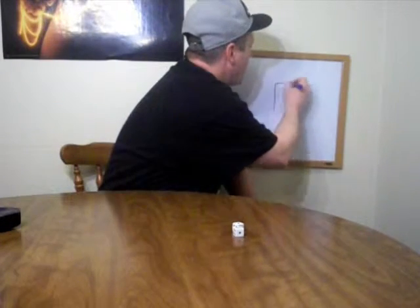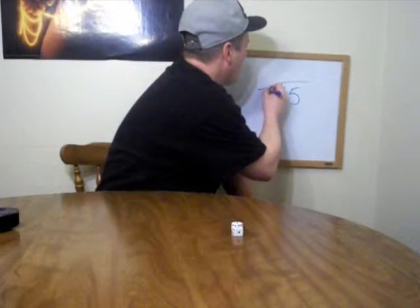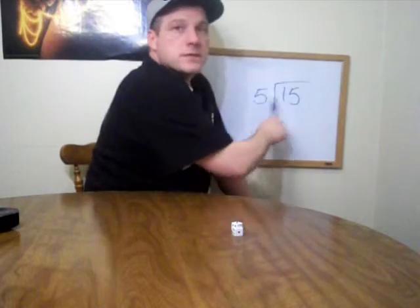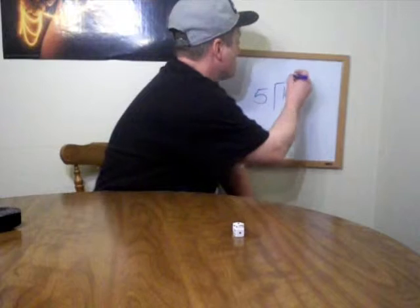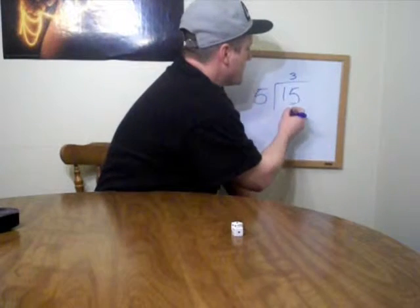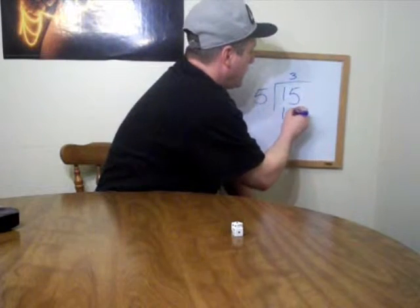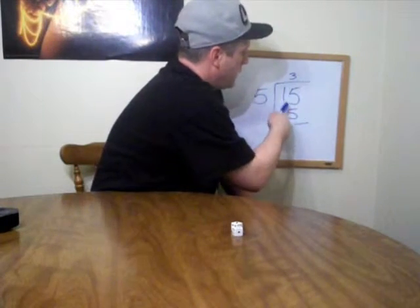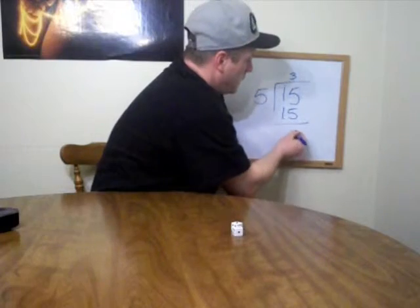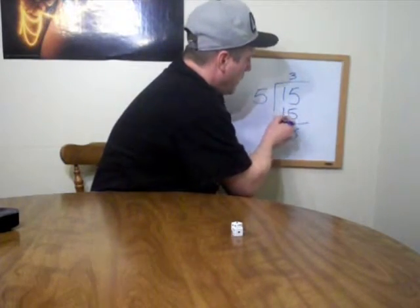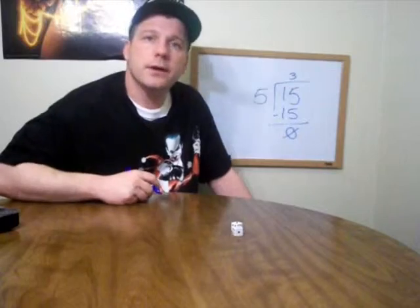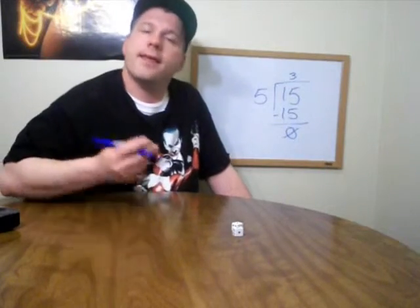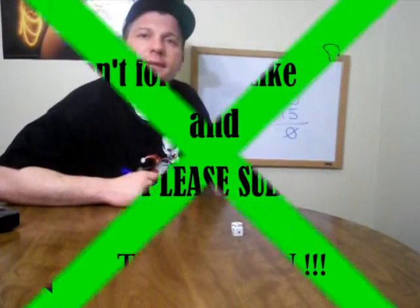15 divided by 5. How many times does 5 go in 15? That's right, it's 3 times. 3 times 5 is 15. 15 minus 15 is 0. Our answer is 3, which is the dice we started out with. That's how we know our multiplication was right.